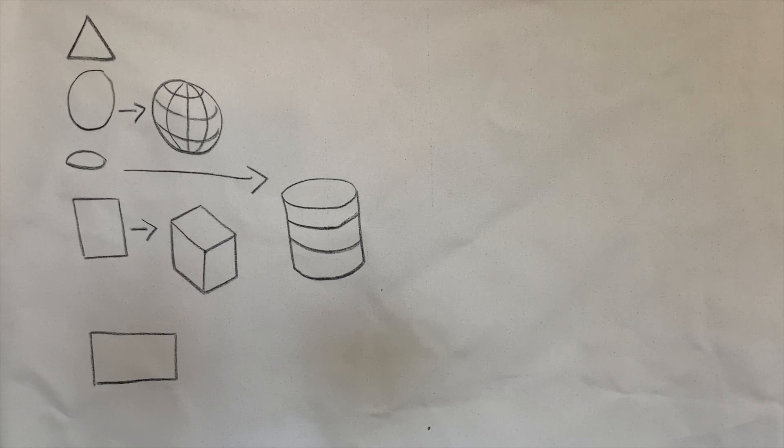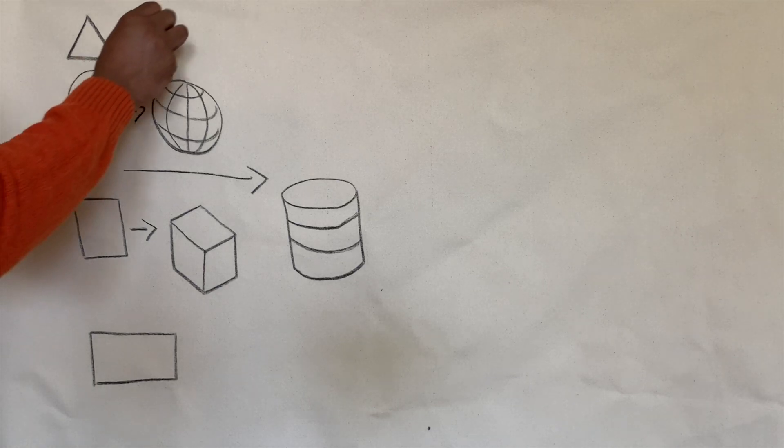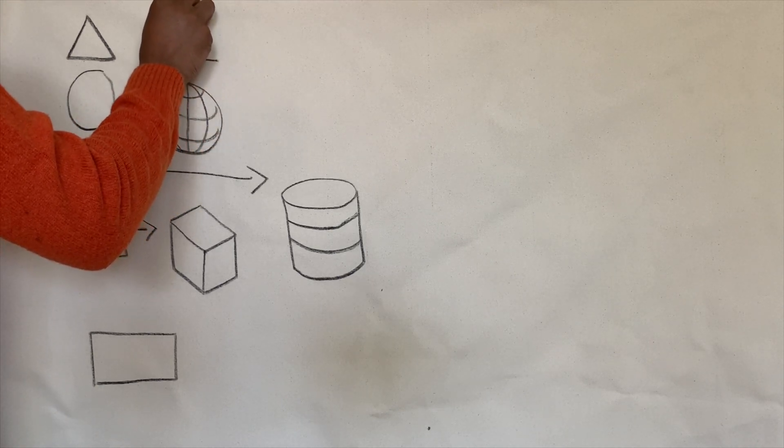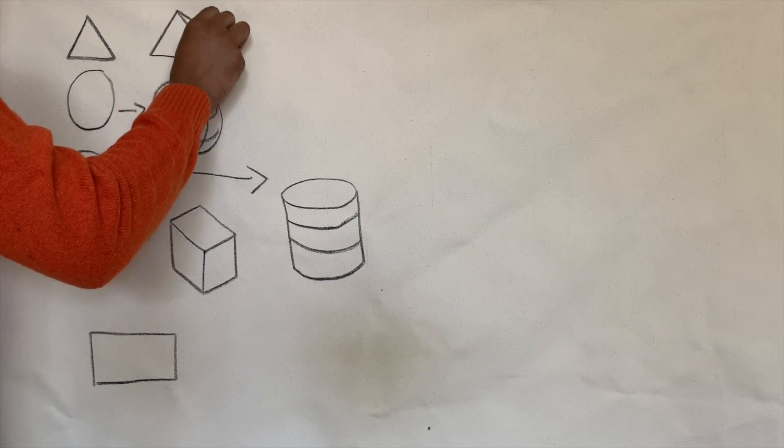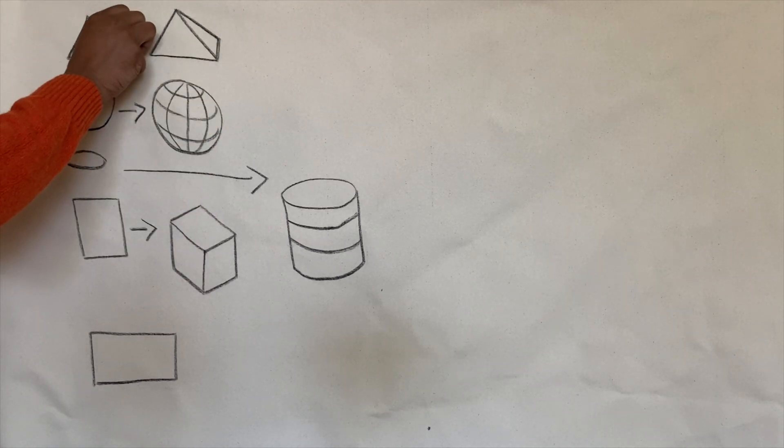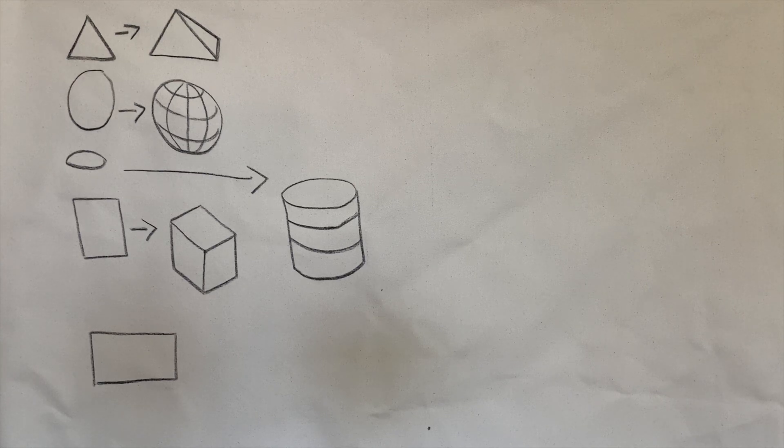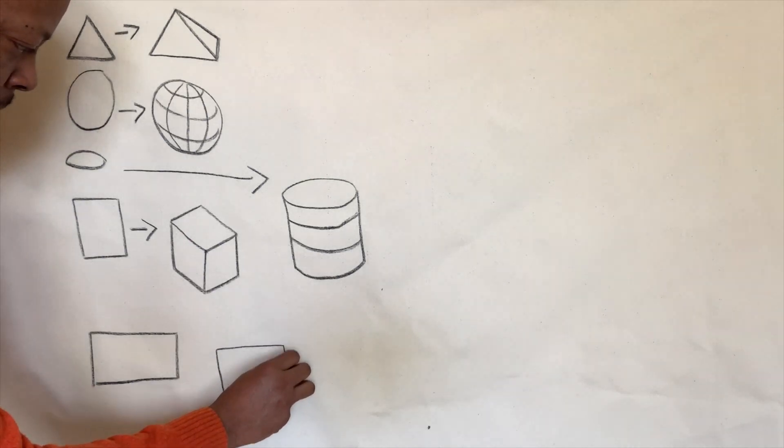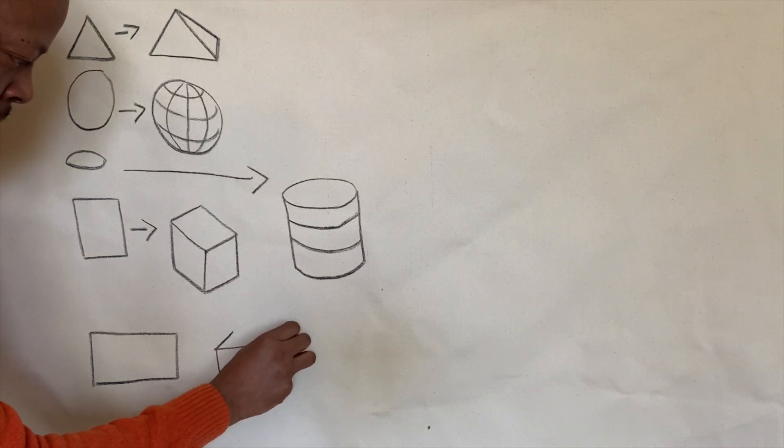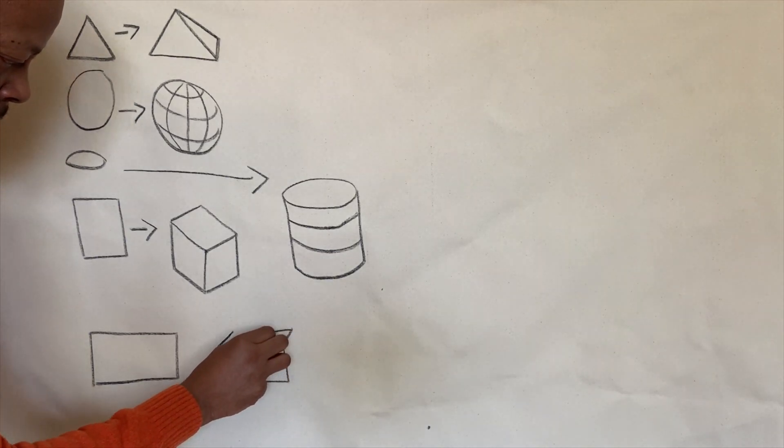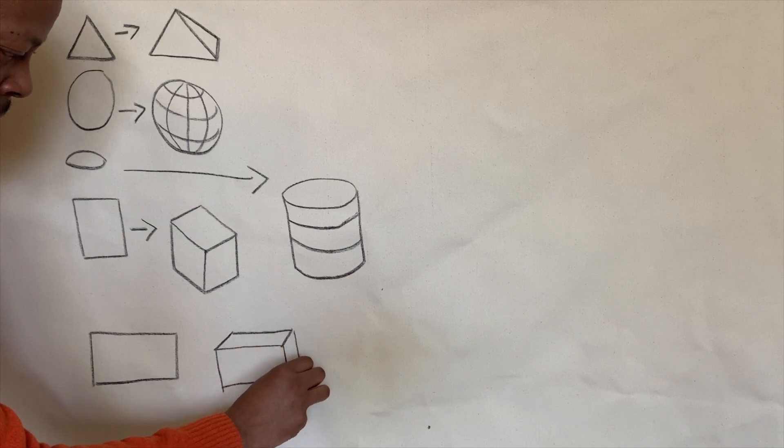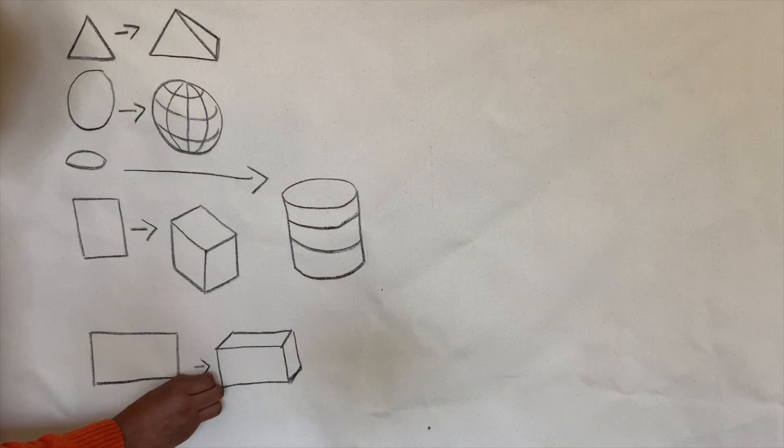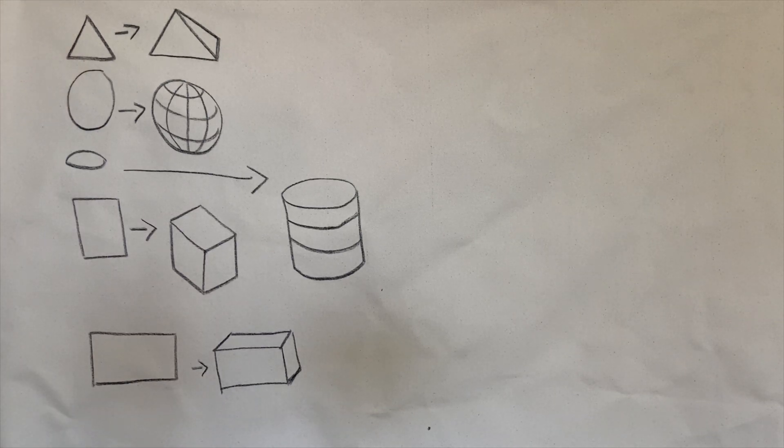That is your cube. Your triangle can become a pyramid. Your rectangle can also become like a box.